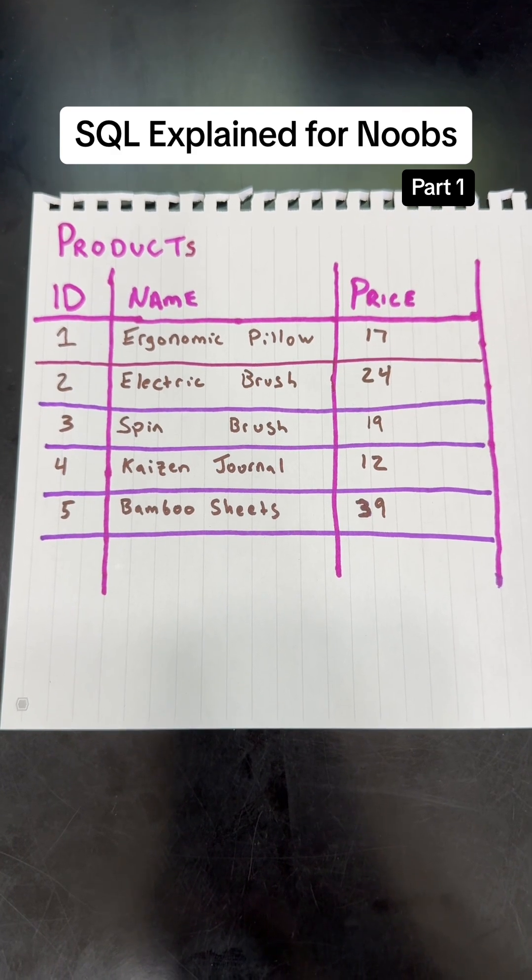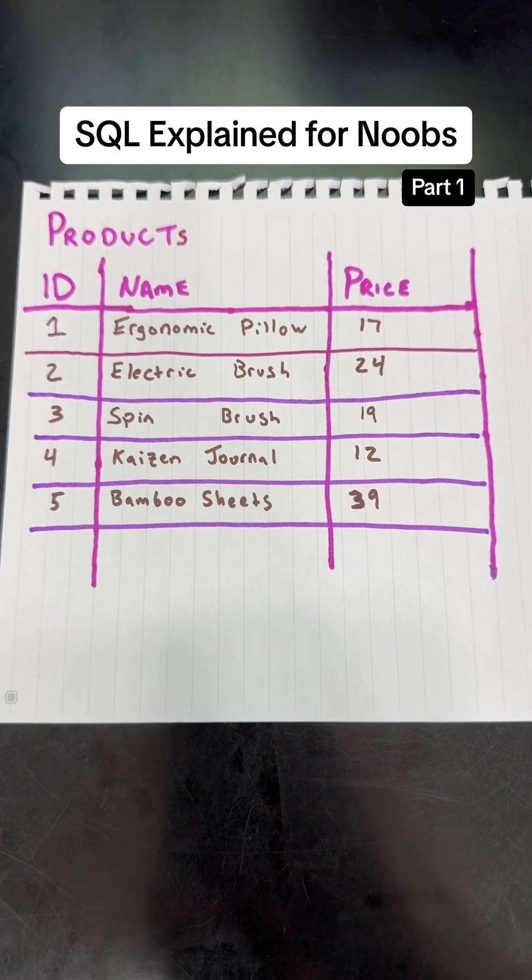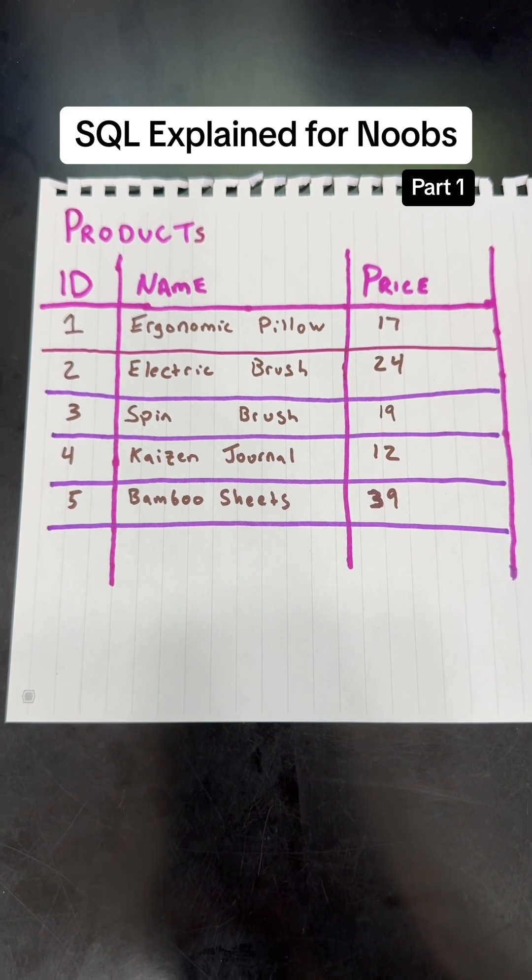It has five records each with an id, a name, and a price and it represents different items on the TikTok shop.